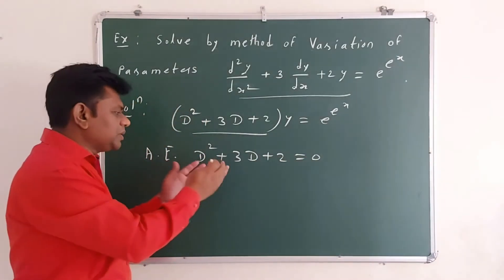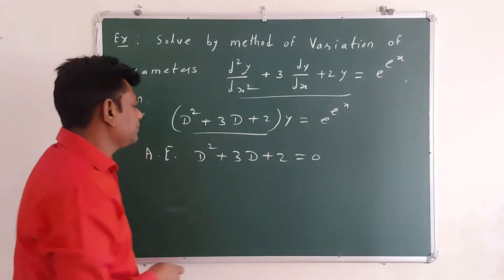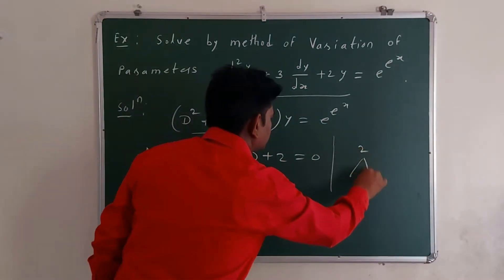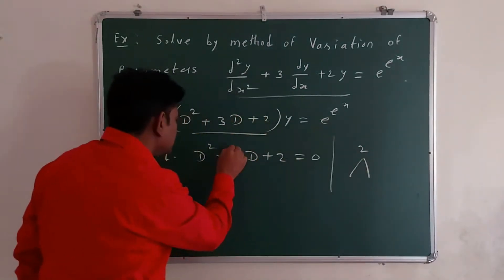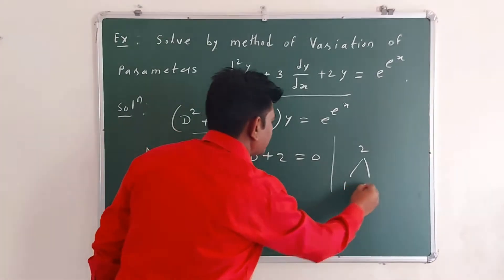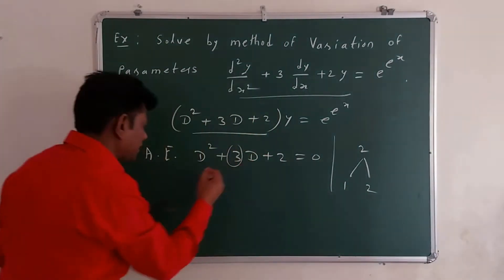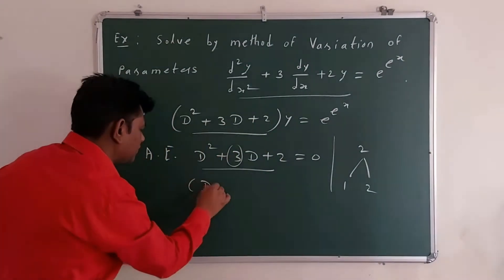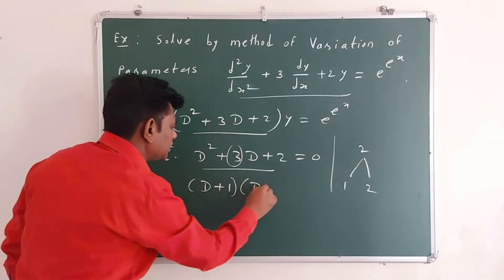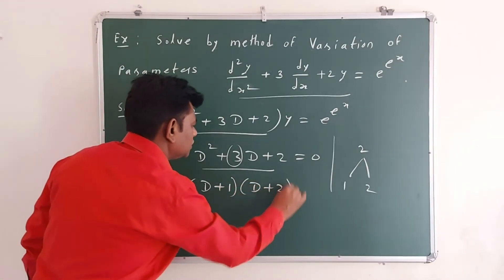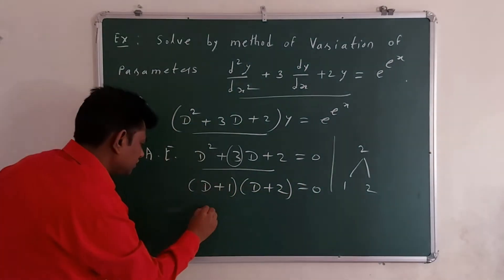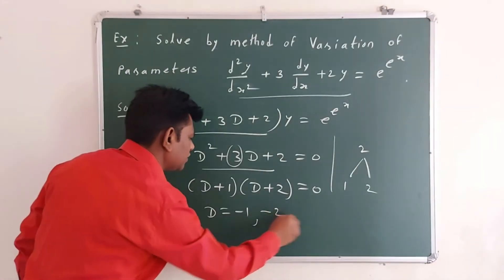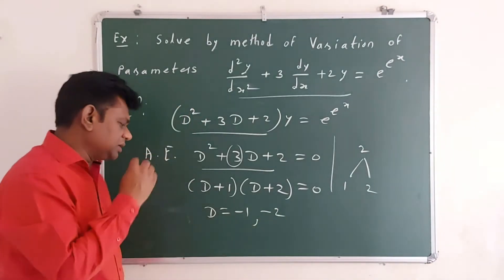We solve this auxiliary equation by factoring. The factors of 2 whose sum is 3 are 1 and 2, so the polynomial factors as (D + 1)(D + 2) = 0, giving roots D = -1 and D = -2.